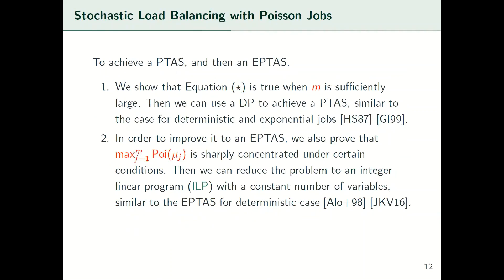To achieve a PTAS, we show that the scaling argument — the star equation — is true for large enough m. For small m, we show a weaker version of the scaling argument, and using these two together, a PTAS using dynamic programming is achievable. To improve it to an efficient PTAS, we prove that the maximum of some Poisson random variables is concentrated under certain conditions. Then we can solve the problem by designing an integer linear programming with a constant number of variables — the same technique used to provide an efficient PTAS for the deterministic case.